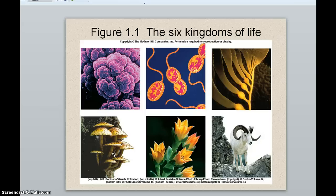And then of course we have a large diversity of plant species in the world and a large diversity of animal species. So these last three kingdoms are fungi, plantae, and animalia.